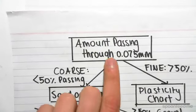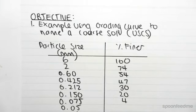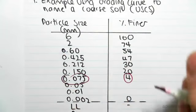Now the first thing we need to do on our flowchart is determine the amount passing through 0.075 millimeters. We can see this from our table. If we go to 0.075, 4% has passed through.